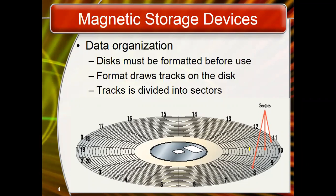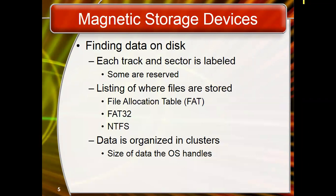To write data on the hard disk, a magnetic field is placed in one of two polarities — north or south. Orientation in one direction, such as NS, can represent one, while the opposite orientation, SN, represents zero. These polarities are sensed by integrated controllers built within the hard disk.